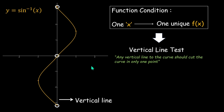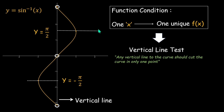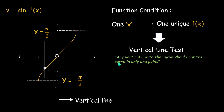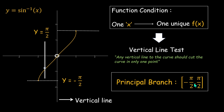We can make this a function by restricting its range. If we restrict the curve between y = -π/2 and y = π/2 and discard the other parts, any vertical line will only cut the curve at one point. So we get a function by restricting the range to [-π/2, π/2], and this restricted range is called the principal branch. In this branch, y = sin⁻¹x is a function.